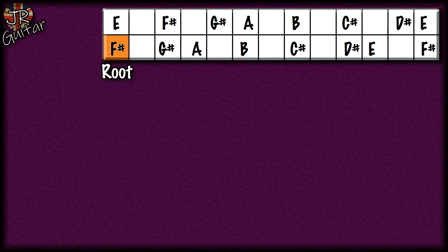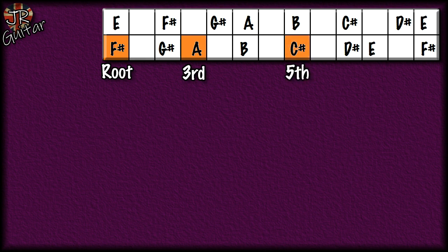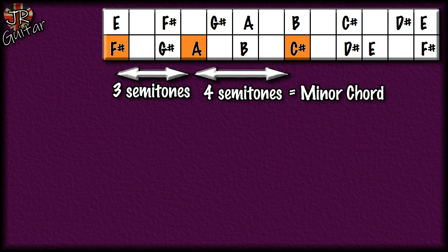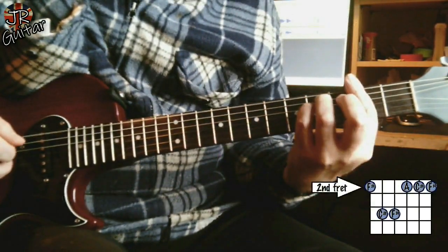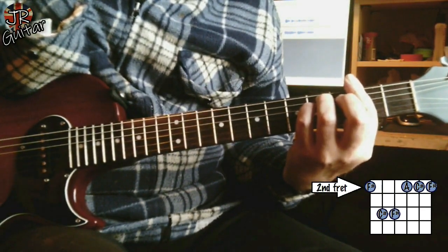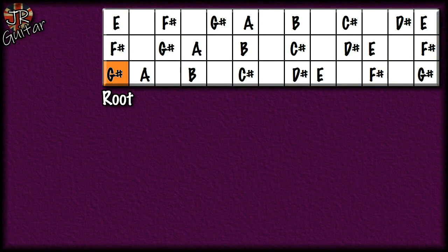Now let's do the same root-third-fifth thing but starting on the F# note. The root is F#, the third is A, and the fifth is C#. This time the distance from the root to the third is three semitones, and from A to C# is four semitones. Anytime you have this three-semitone plus four-semitone pattern, that gives you a minor chord. Because we're starting on F#, we get an F# minor chord.